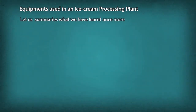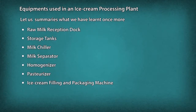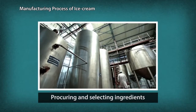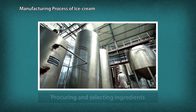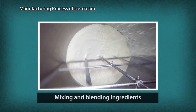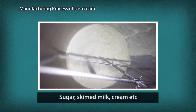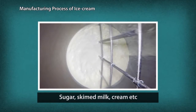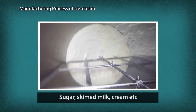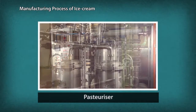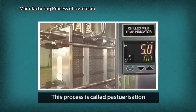Let us summarize what we have learnt once more. Manufacturing Process of Ice Cream: After the milk is procured from the dairy farm, it is checked and stored in large tanks for cooling at less than 5 degrees centigrade. This cooled milk is then transferred to the tri-blender and mixed with ingredients like sugar, skimmed milk, cream, etc., and mixed together by churning in tanks at 60 degrees centigrade to help dissolve and prepare a premix which would be the base for the ice cream. This premix is then sent to a pasteurizer where it is heated to 82 degrees centigrade for 18 seconds and then quickly cooled to 5 degrees centigrade. This process is called pasteurization.